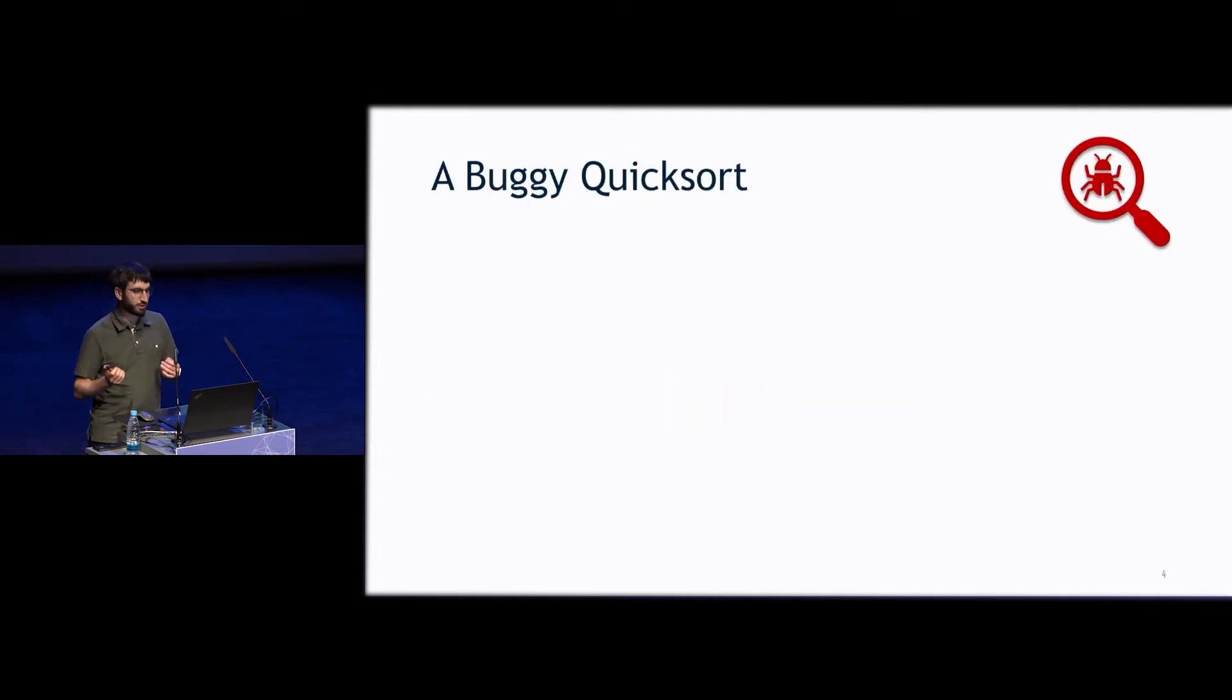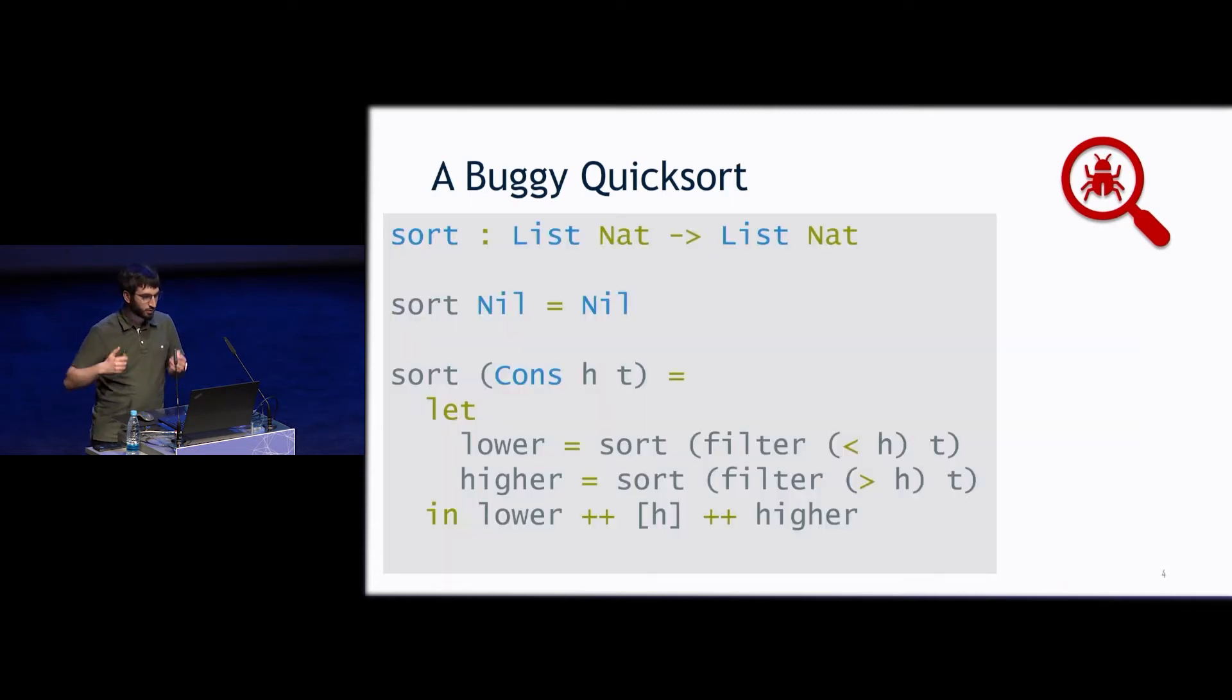So, we'll start with the quick sort that everybody knows and loves, except it'll have a bug. Quick sort, as you're familiar with, sorting the empty list gives us the empty list, and sorting cons of a head and a tail, we take the tail, and we filter it into everything that's less than the head, everything that's greater than the head, and then we sort those and concatenate them together in the right order.